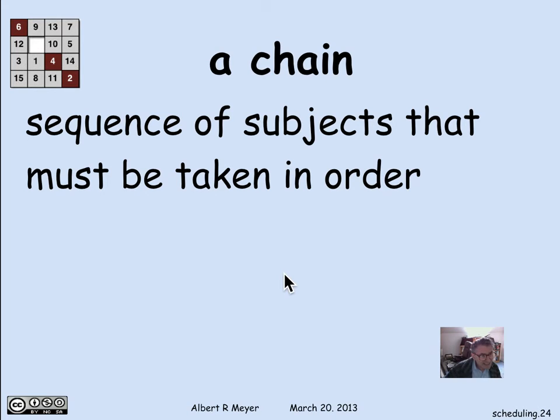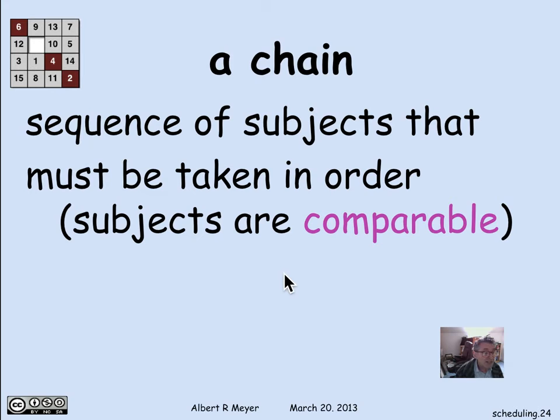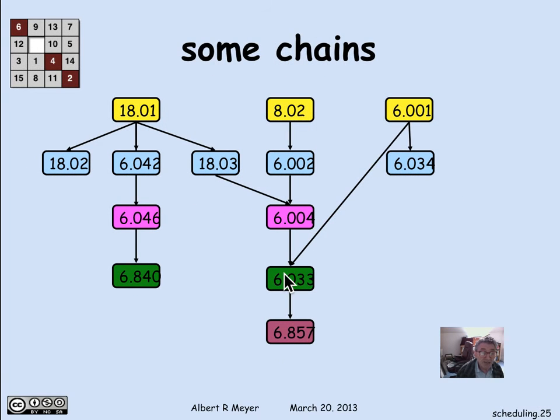A chain is kind of technically, literally, a thing called the dual of an anti-chain. A chain is a sequence of subjects that must be taken in order. That is, these are subjects where, for any two of them, you know which one has to come first. That is, between any two of them, there is a path in one way or the other. Now, of course, it's a DAG, so they can't be paths in both directions. So a chain is simply a set of comparable elements, which implies that there's an order in which they have to be taken.